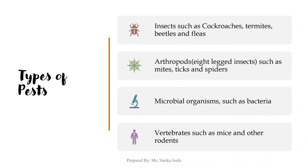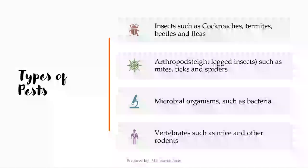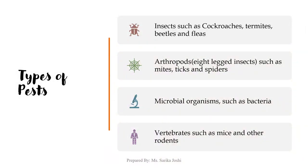The types of pests can be divided into the first category, which is insects such as cockroaches, termites, beetles and fleas. Arthropods, which are eight-legged insects such as mites, ticks and spiders, fall into another category. Pests can also be microbial organisms such as bacteria, or vertebrates such as mice or other rodents. This is a general categorization of different categories of pests.